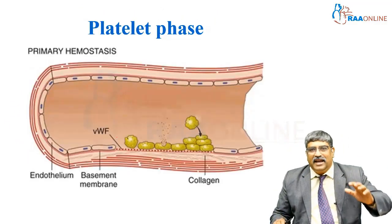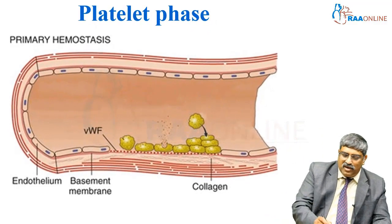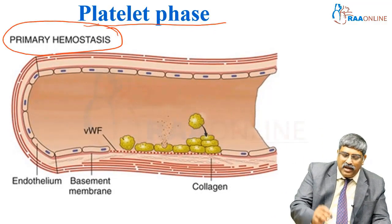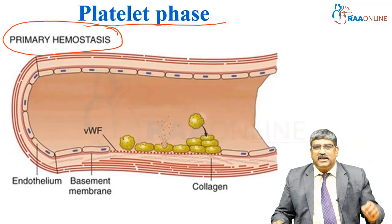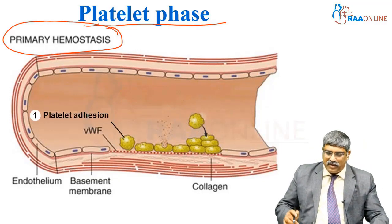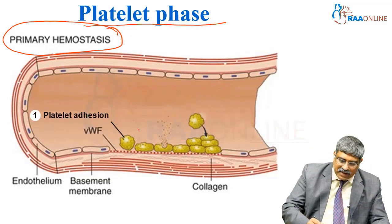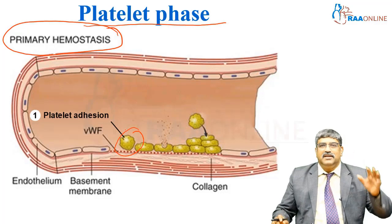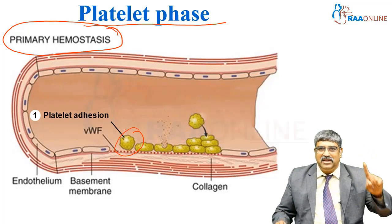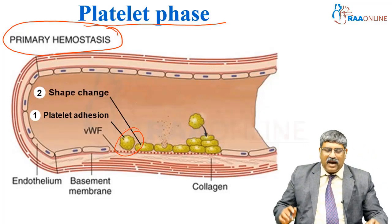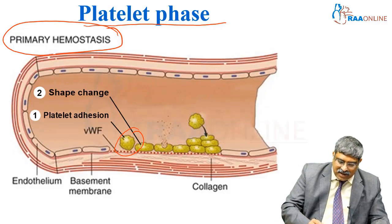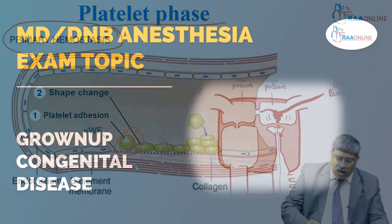Coming to the next phase, which is called the platelet phase or primary hemostasis. The first thing which happens is platelets get added to the site of injury. Second, the platelet, which is normally dish-shaped, undergoes changes.